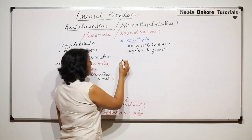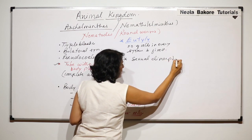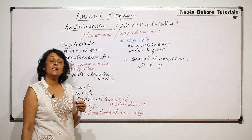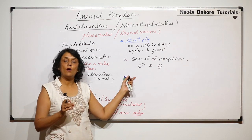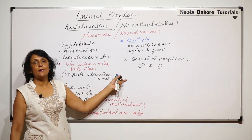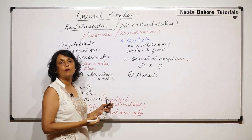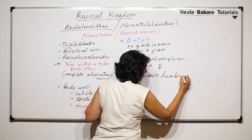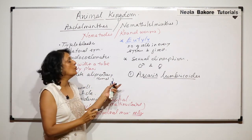They show sexual dimorphism, meaning the males and females are separate and can be distinguished from each other easily based on external appearance or morphology. The first example we will take is Ascaris, commonly known as the roundworm — specifically Ascaris lumbricoides.